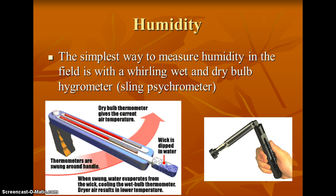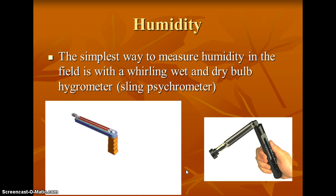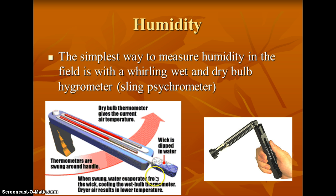To measure humidity, we use what is called a wet-dry bulb hygrometer, or more commonly known as a sling psychrometer. One of the thermometers has a wet bulb — here's the one that's dipped in water. When water evaporates, it lowers the temperature. So we look at the difference in temperatures between the two thermometers, and that can help us figure out the humidity — the amount of moisture in the air.